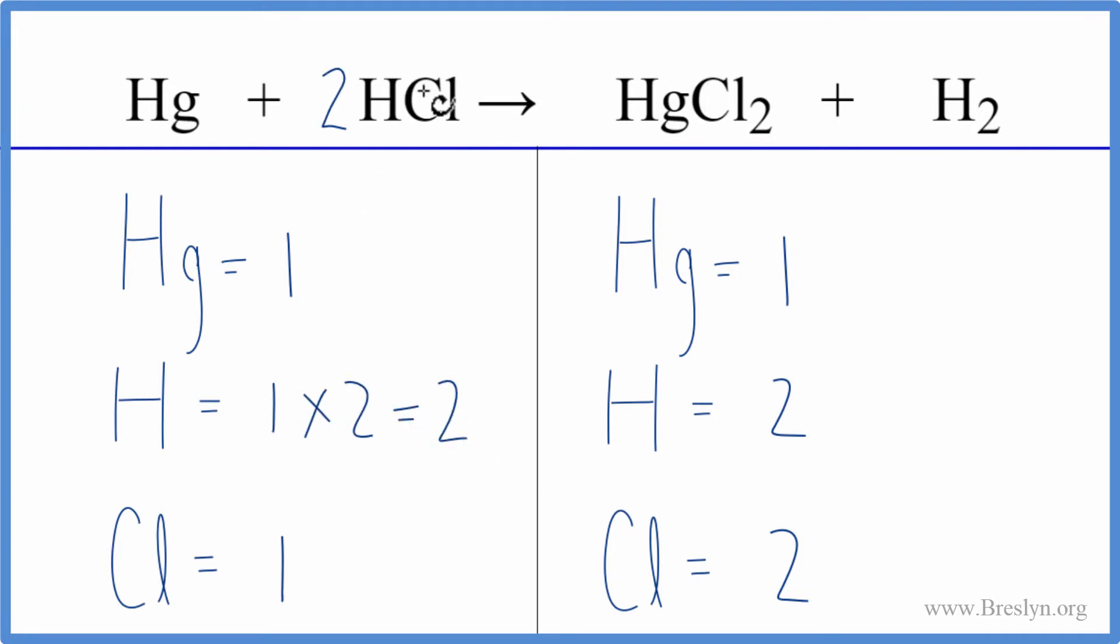And this coefficient of two, it applies to everything here. So we now have one times two for the chlorine, and that gives us two chlorine atoms. And now everything is the same on each side of the equation.